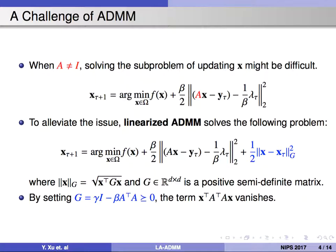To deal with this issue, linearized ADMM was proposed. It solves the following problem, which adds a proximal term. By selecting G in this way, the AX term can vanish.